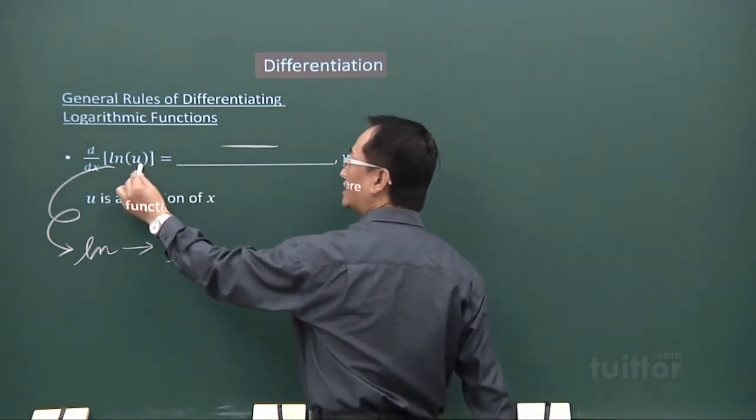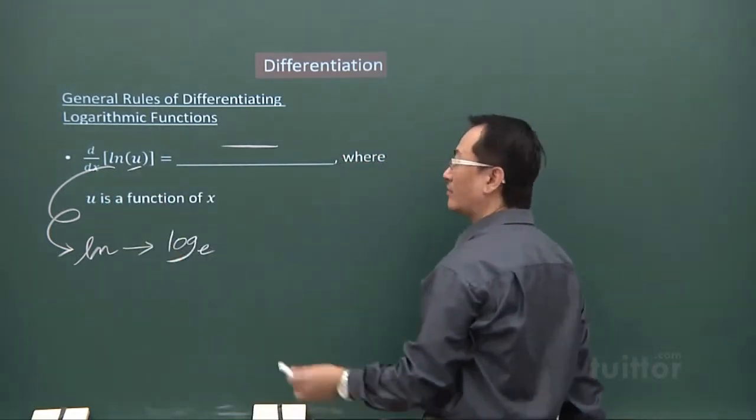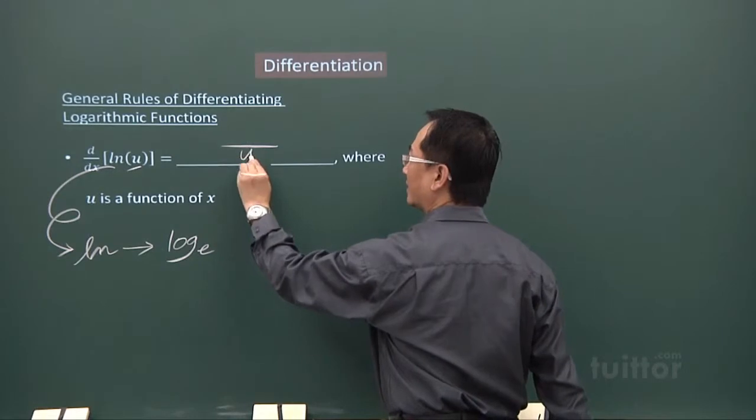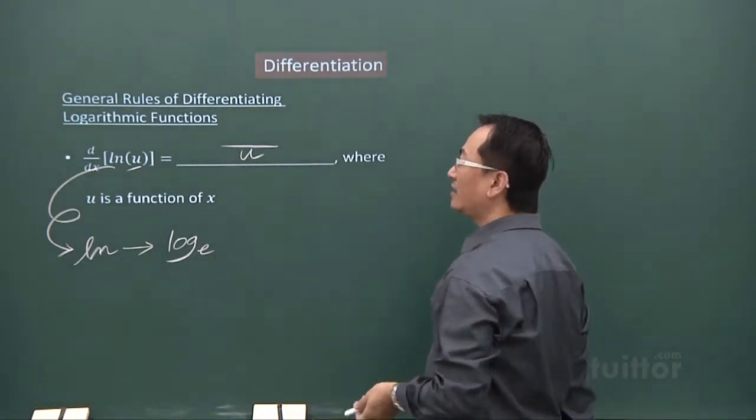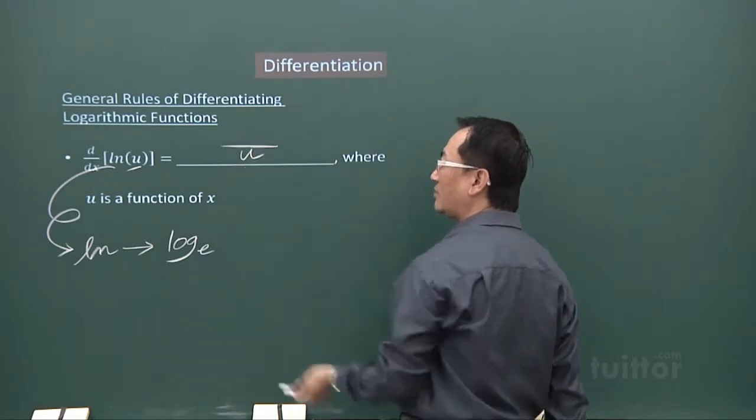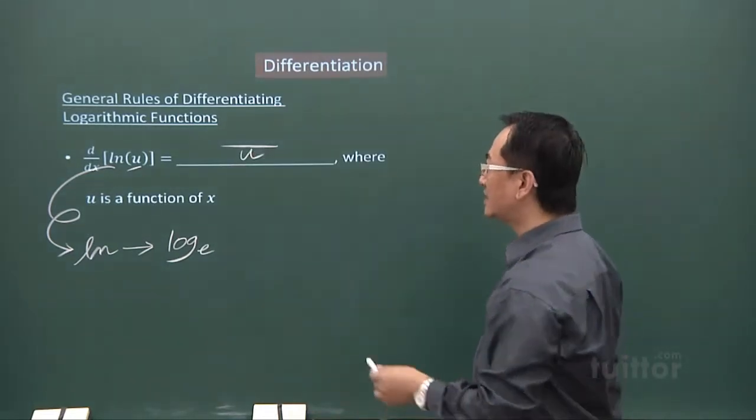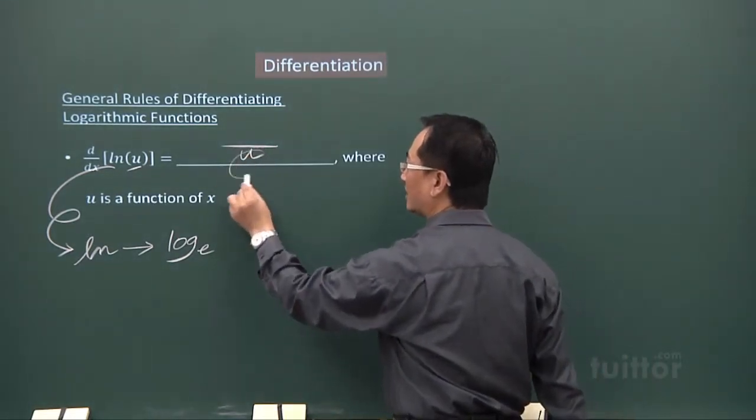What you have in this function is a u. You place it in the denominator place. Then, in the numerator place, what you have is just the differentiation of this.